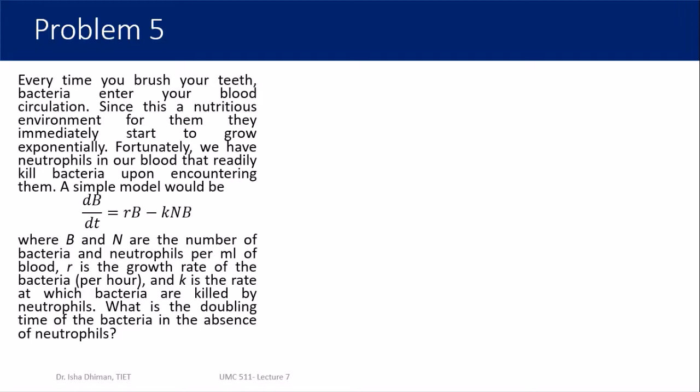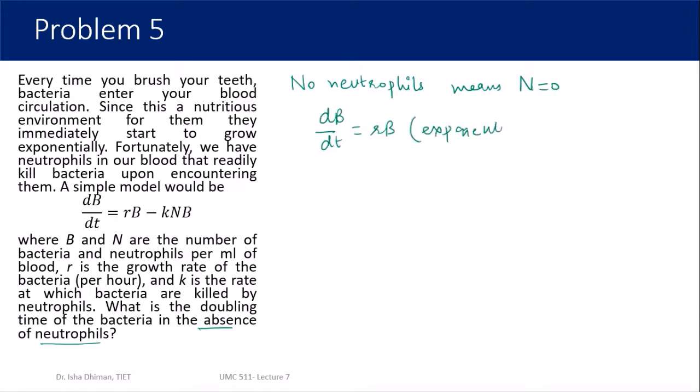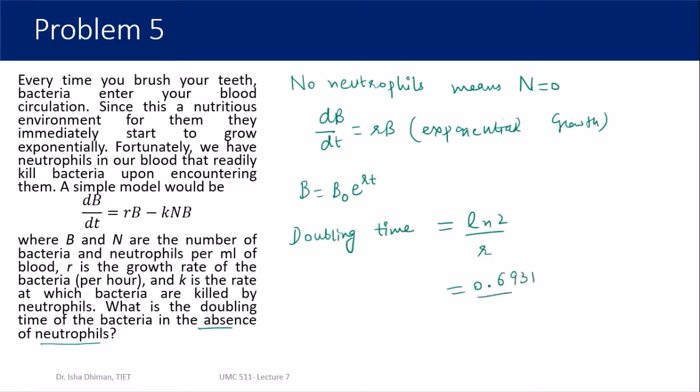In the absence of neutrophils, N = 0, so the model reduces to db/dt = rb, which is purely exponential growth. The doubling time is then T = ln(2)/r. Since a specific value of r is not given, we leave the answer in this form. The key insight was interpreting 'absence of neutrophils' as setting N = 0 directly in the model before solving, rather than solving first and substituting later.